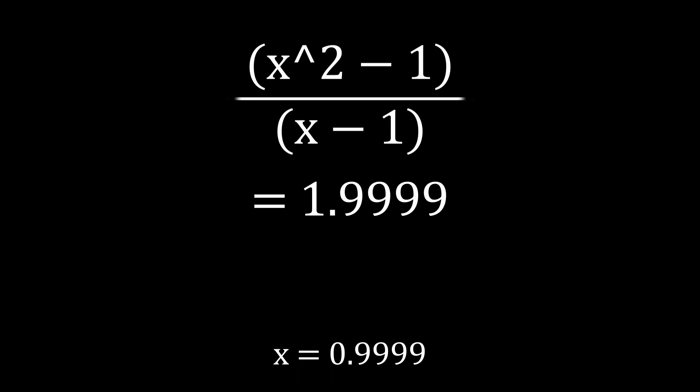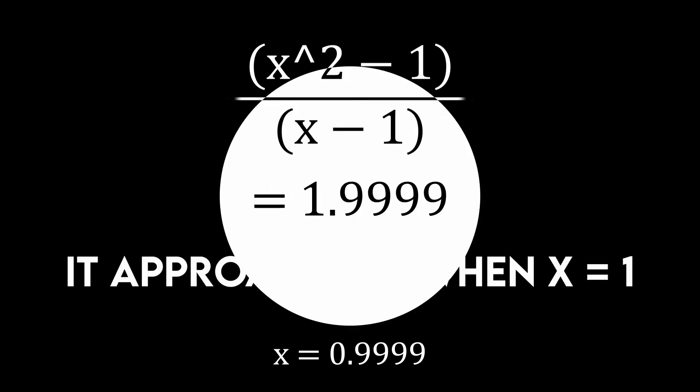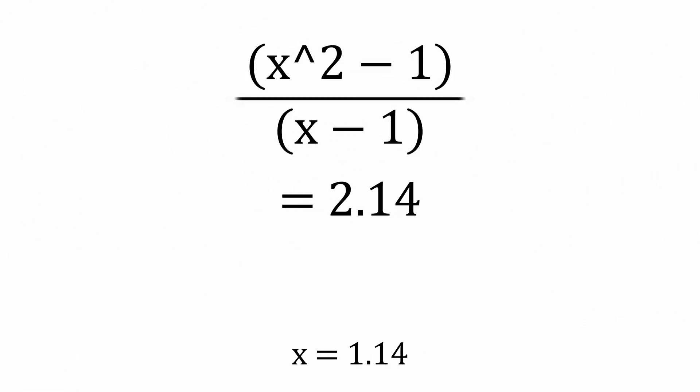As we keep getting closer to 1, we can see it wants to be 2. The same happens when going from the other direction. We can't just say that when x equals 1 it equals 2, however.